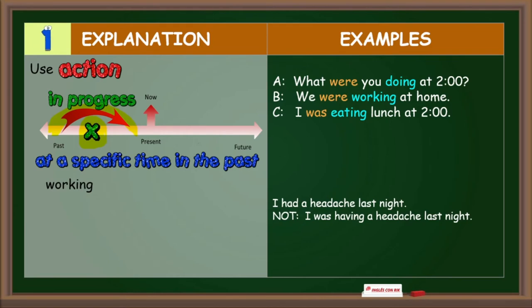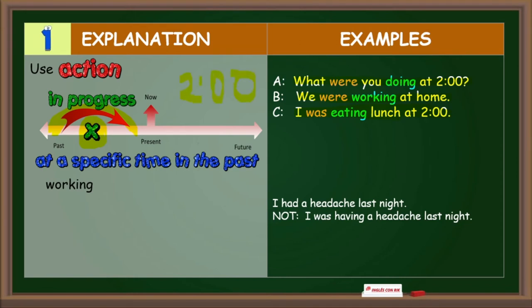For example, what were you doing at two o'clock? We were working at home. I was eating lunch at two o'clock. Here, the specific time in the past is two o'clock. They began with the action before two o'clock and may or may not continue after that specific time.